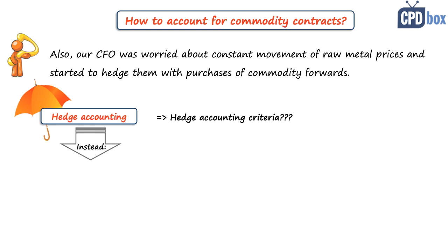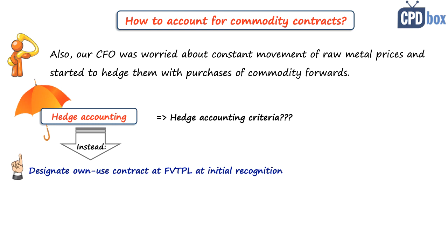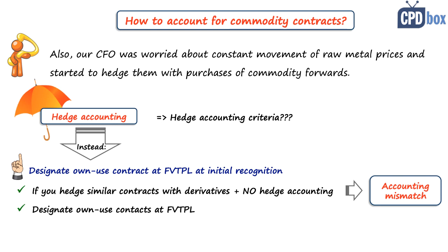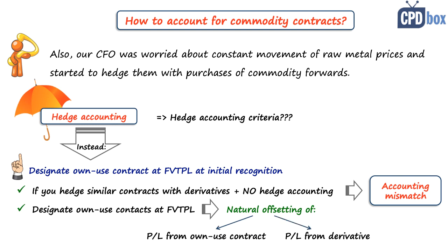You can decide to designate the own-use contract at fair value through profit or loss at initial recognition — not later, be careful about that. If you hedge similar contracts with derivatives and you don't want to apply hedge accounting, then you would have an accounting mismatch, because you would revalue your derivatives through profit or loss but not the own-use contract, so you would see just one-sided profit or loss. Instead, you designate the own-use contract at fair value through profit or loss and you reach automatic natural offsetting of profit from own-use contracts with loss on the hedging instrument derivative, or vice versa.